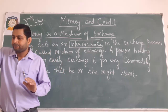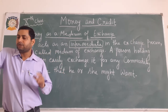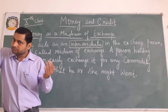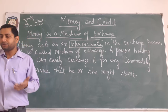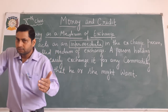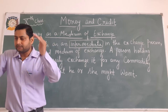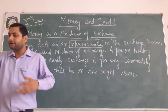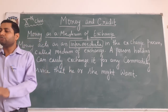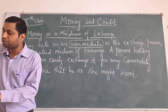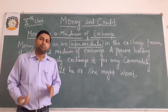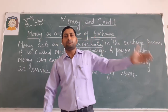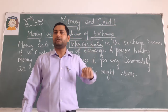Take the case of a shoe manufacturer — he wants to sell shoes in the market and buy wheat. The shoe manufacturer will first exchange the shoes he has produced for money, and then exchange the money for wheat. Imagine how much more difficult it would be if the shoe manufacturer had to directly exchange shoes for wheat without the use of money.